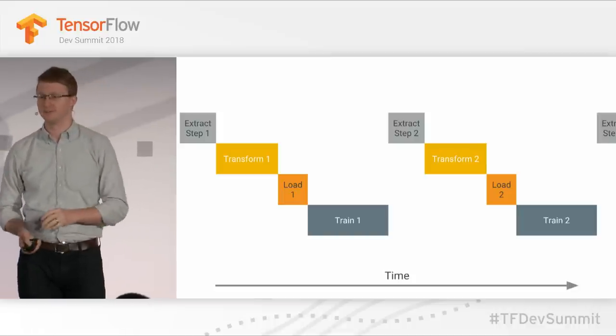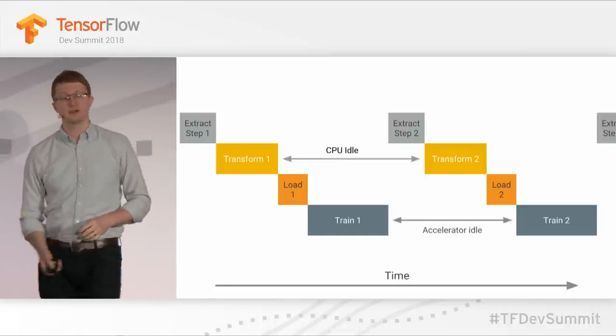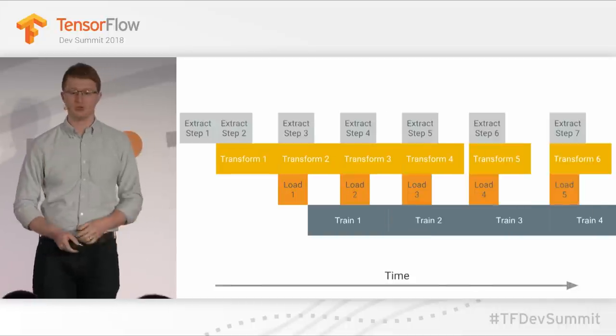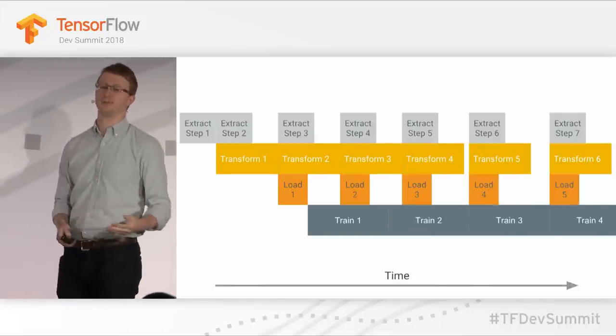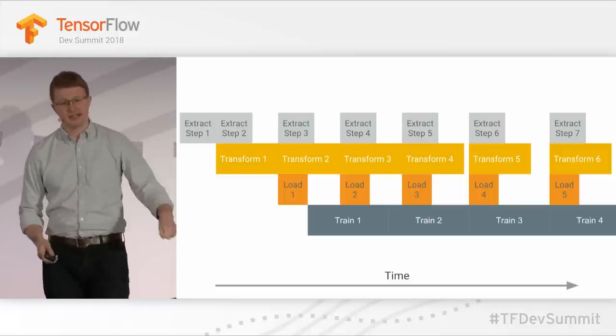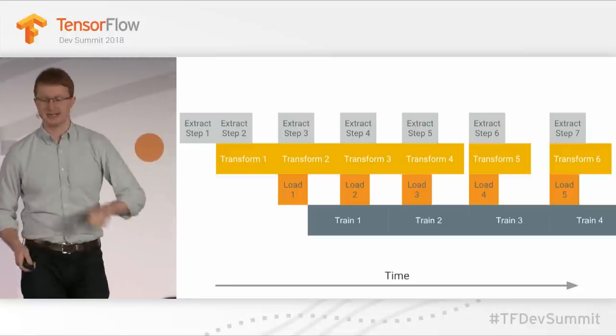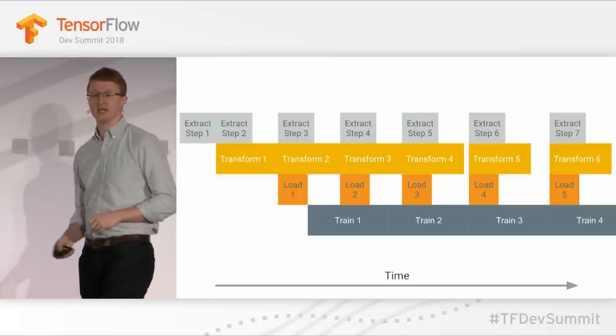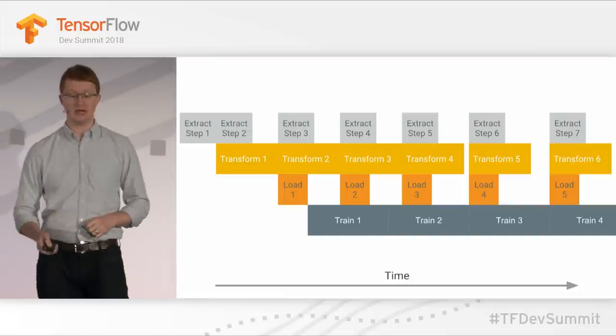If you map this out over time: during extraction, you're doing nothing with the CPU; during the transform phase, you're doing nothing with the CPU-to-accelerator connection; and while you're training, the entire CPU and the rest of the machine is just sitting idle. This is incredibly wasteful. Because they all use different components, you can actually overlap all of this in a technique called software pipelining, resulting in very efficient use of your compute resources.